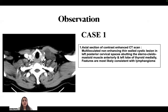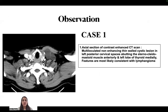In the first case, the axial CT scan image shows a multiloculated non-enhancing thin-walled cystic lesion in the left posterior cervical space, abutting the sternocleidomastoid muscle anteriorly and the left lobe of thyroid medially. Features are most likely consistent with lymphangioma.